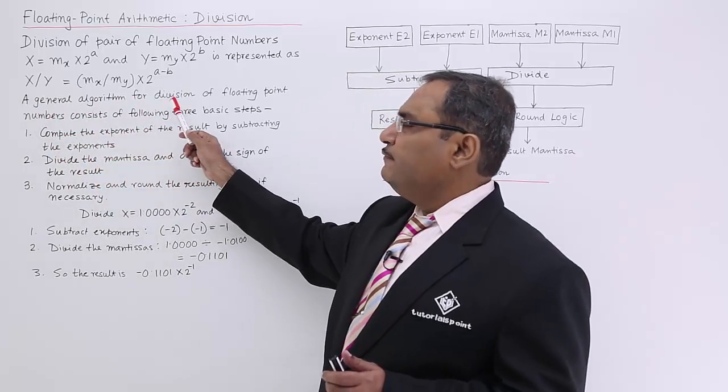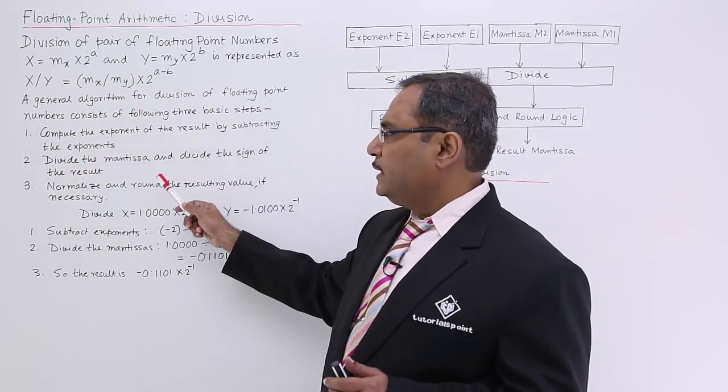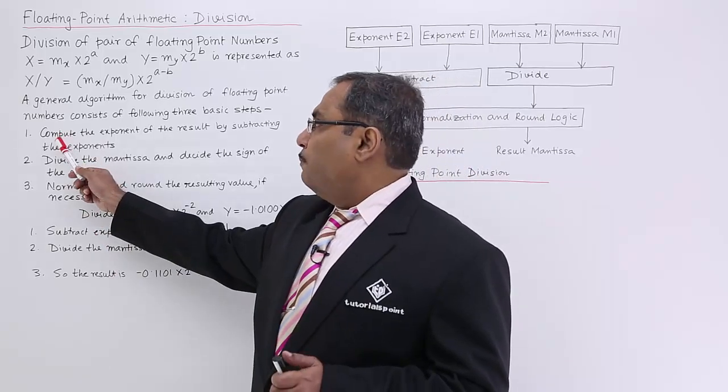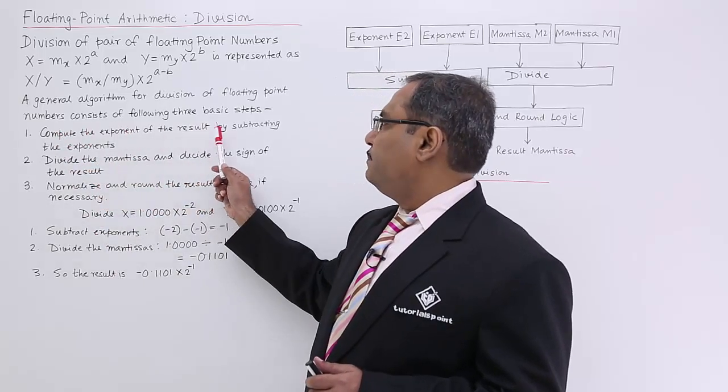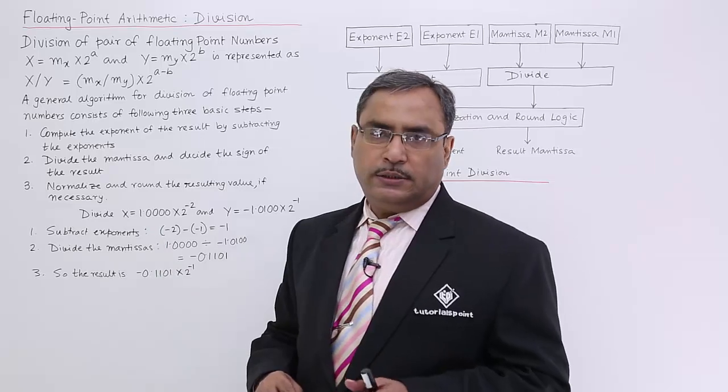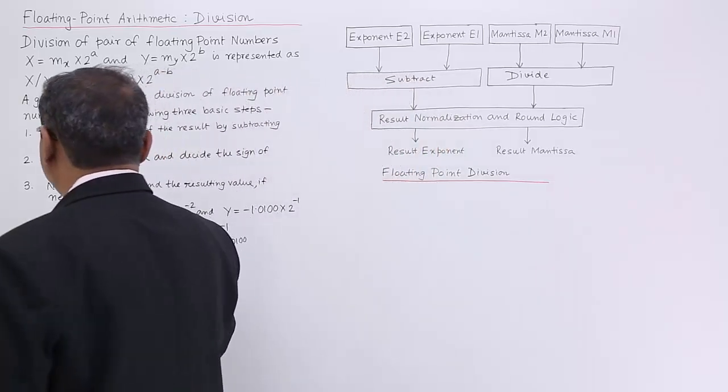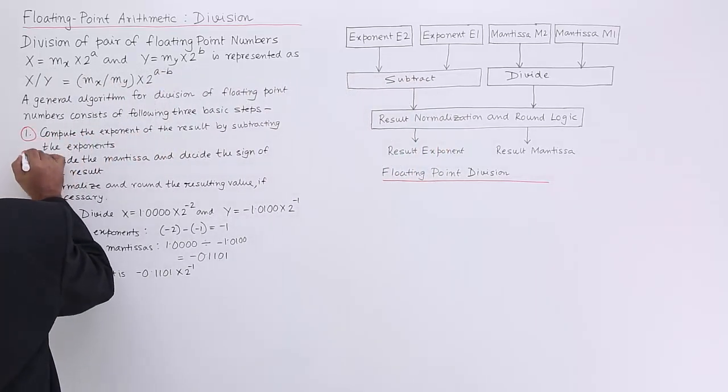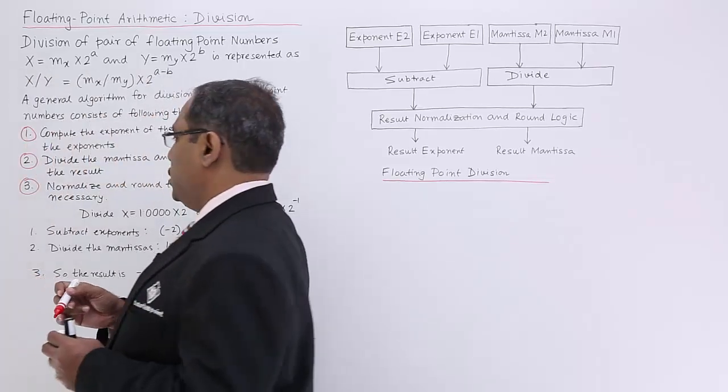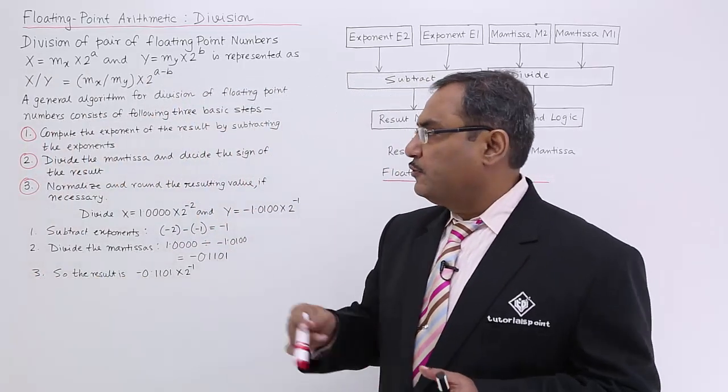A general algorithm for division operation has been depicted in the following steps. Compute the exponent of the result by subtracting the exponents. So that is the point number one. I am having three points here. Compute the exponent by subtracting.